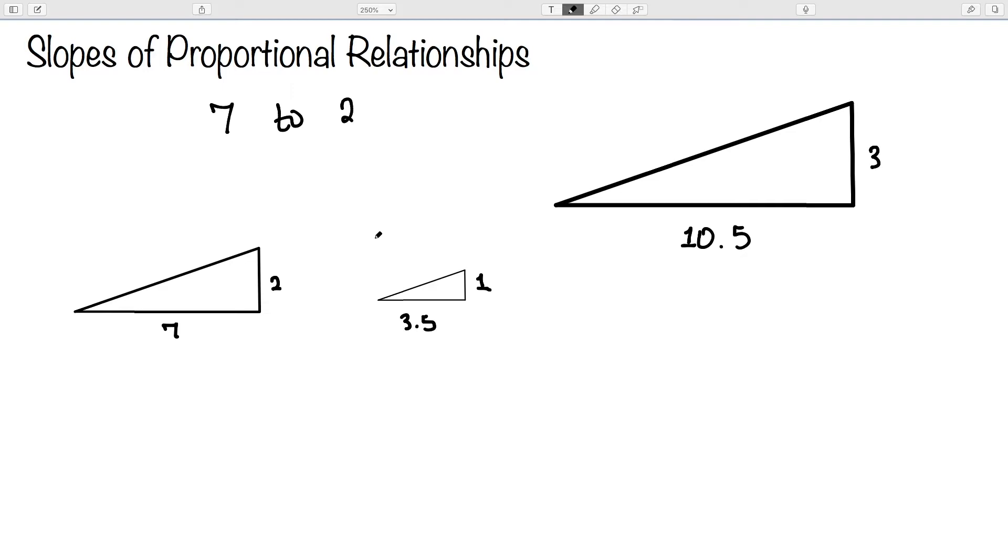While these ramps vary in length and height, they are equally steep. And their steepness is going to be the same steepness as the line in the graph of the proportional relationship. And this steepness of the line is typically known as slope.